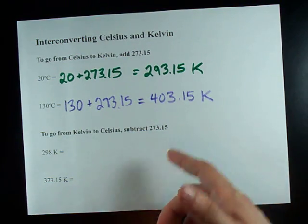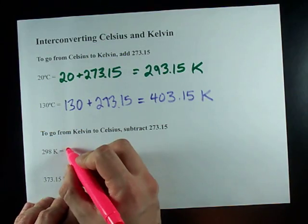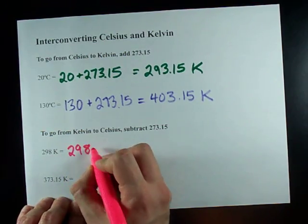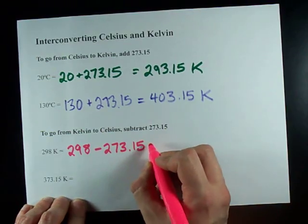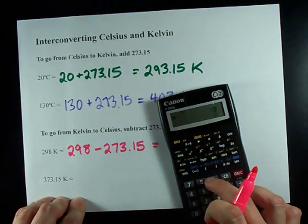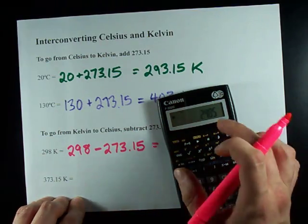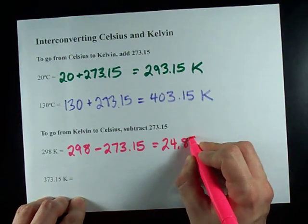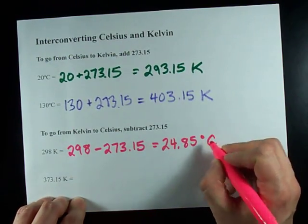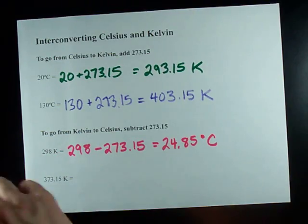You're subtracting 273.15. 298 Kelvin is 298 minus 273.15, which gives me 24.85 and my units here are degrees Celsius and I do use the degree symbol here.